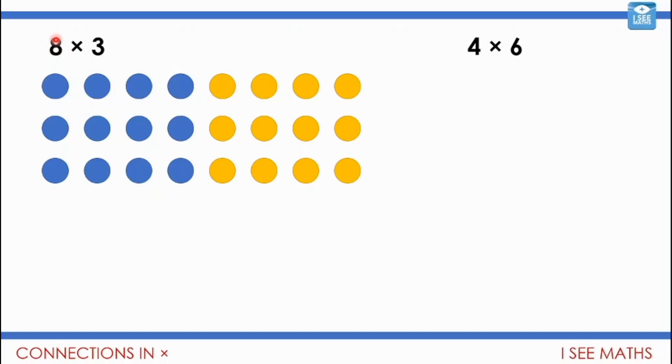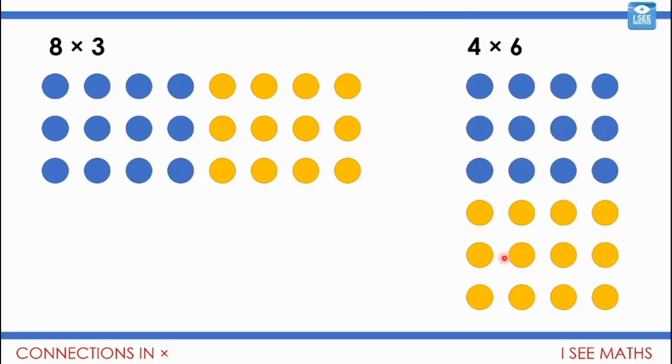Now have a look at this. I can change eight threes to make it four sixes. So what I'm going to do is I'm going to halve this eight and I'm going to double this three to make it half of eight is four, double three is six. And have a look how the picture changes. So can you see both pictures still have this blue section, but can you see the yellow one has almost gone underneath here?